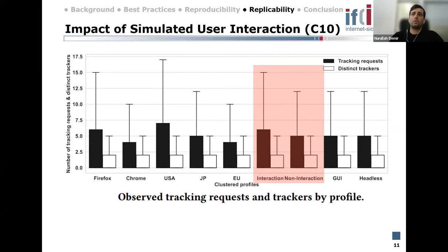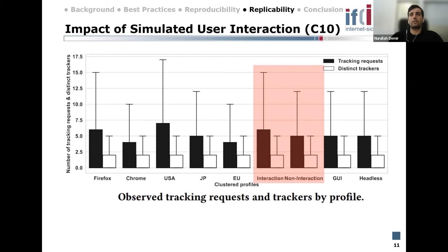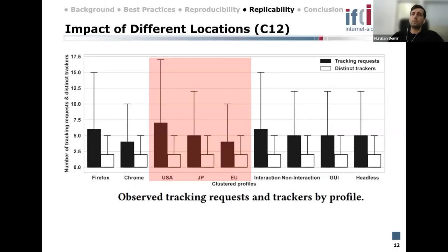We analyzed the impact of user interaction while crawling — what happens when we mimic user interactions on the page. We see on average 20 percent more traffic on profiles with interaction. Chrome profiles with interaction record an increase of six percent, while Firefox profiles have an increase of 36 percent. A very interesting finding was that six percent of new requests in Chrome were tracking requests after mimicking user interaction, while for Firefox it was 73 percent. Interaction profiles also showed distinct new trackers.